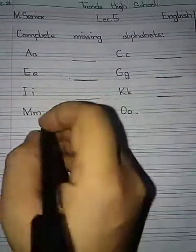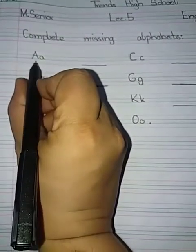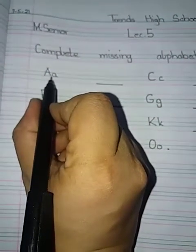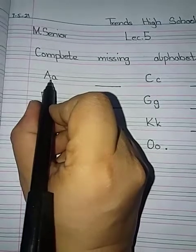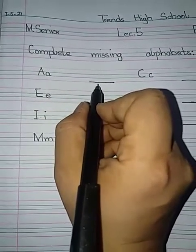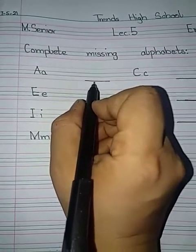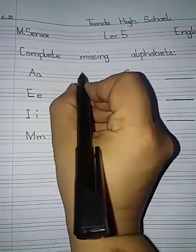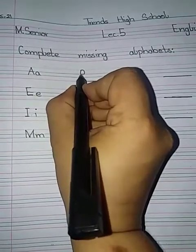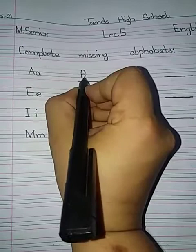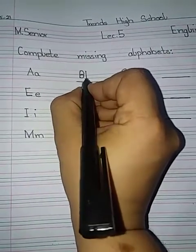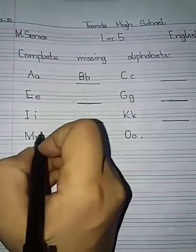Now start with me. A. What is this? A. Now start reading. A. B. See, is B here? No. B is missing. So we will write B. Capital B and small b.